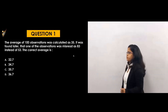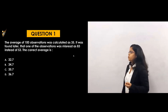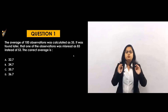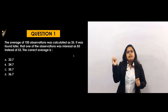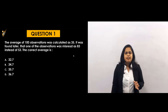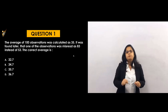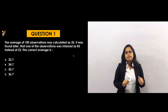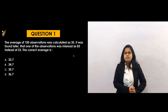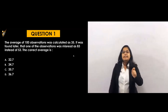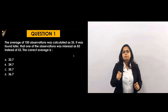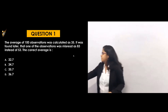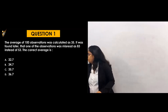It was found later that one observation was misread as 83 instead of 53. That means a student calculated the average of 100 numbers as 35, but he had written 83 instead of the actual value 53. The correct average is wrong because of this error — what is the correct average?